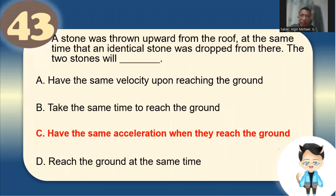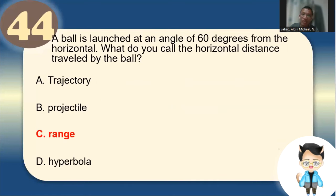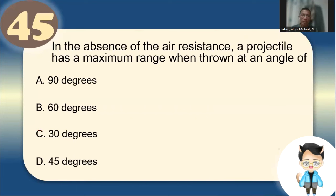Number 44: A ball launched at 60° from the horizontal — the horizontal distance traveled is called the range, not trajectory or projectile. Number 45: In the absence of air resistance, a projectile has maximum range when thrown at 45 degrees.